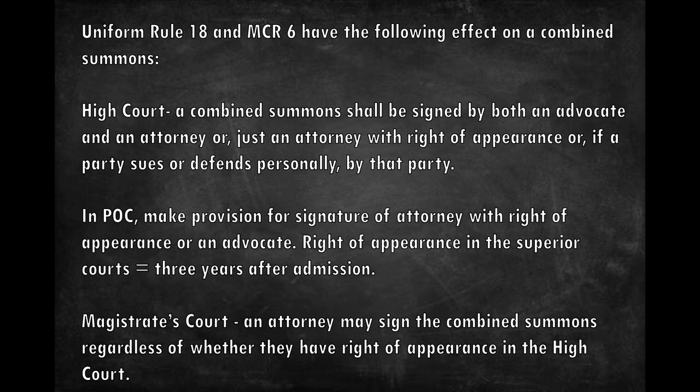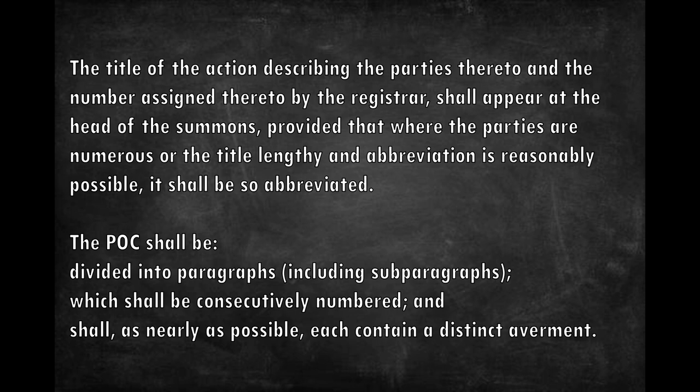The title of the action describing the parties and the number assigned by the registrar shall appear at the head of the summons, provided that where the parties are numerous or the title lengthy, an abbreviation, if reasonably possible, shall be used. This rule refers to the heading of the summons as described earlier. The particulars of claim shall be divided into paragraphs including subparagraphs, which shall be consecutively numbered, and shall as nearly as possible each contain a distinct allegation. The particulars of claim shall contain a clear and concise statement of the material facts upon which the plaintiff relies, with sufficient particularity to enable the defendants to reply thereto.